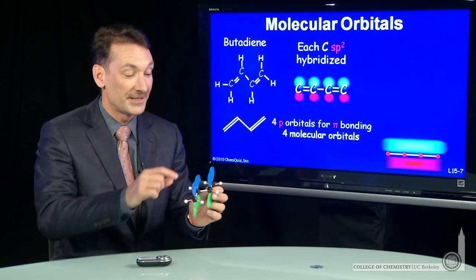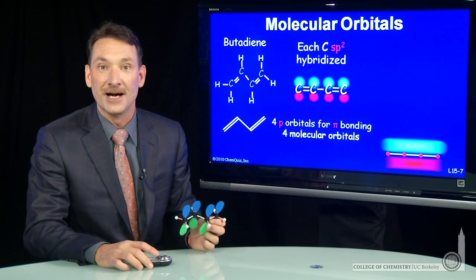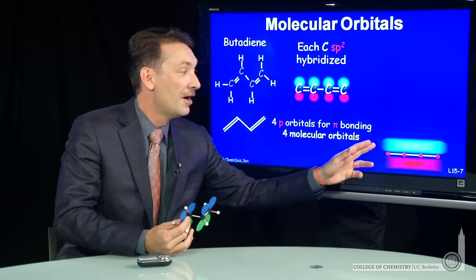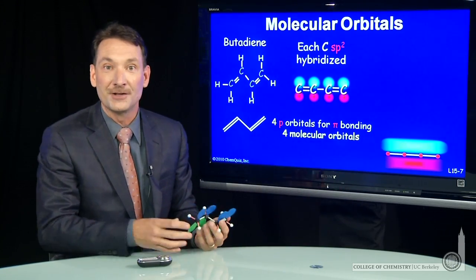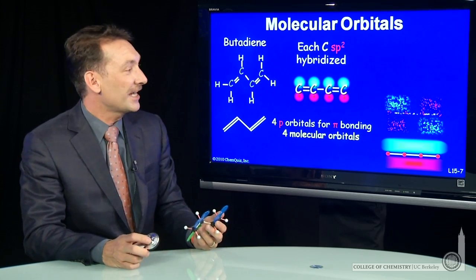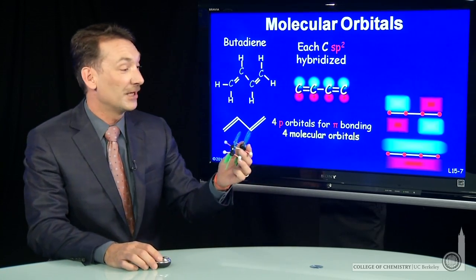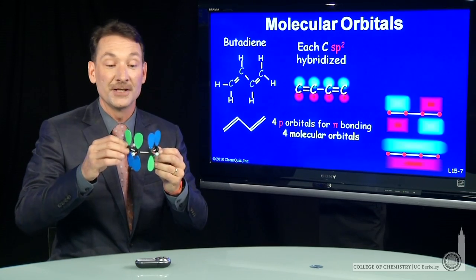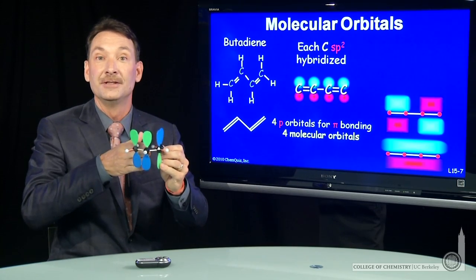And by delocalized, I mean it's over several nuclei. The electron can delocalize. There's a probability of finding it all the way along the length of the molecule. So a second possibility is to have molecular orbitals that look like this. Here's another possibility where you have a node now in the middle.